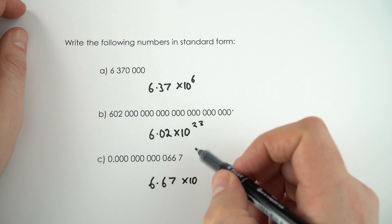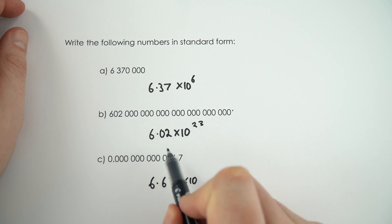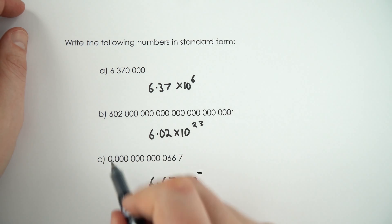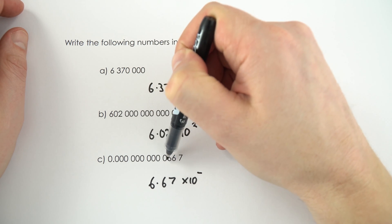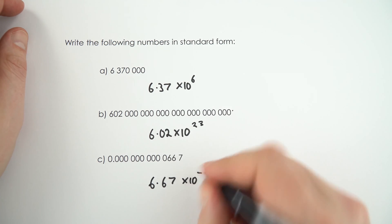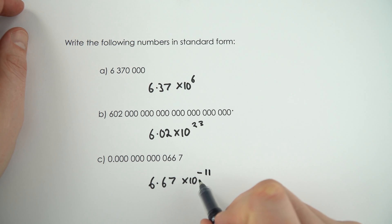How many times do we need to move the decimal place? Well this time we're moving it this way, so it's going to be a negative number. And we move it 3, 6, 9, 10, 11. So this one here is 6.67 times 10 to the minus 11.